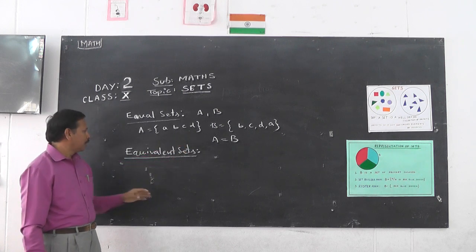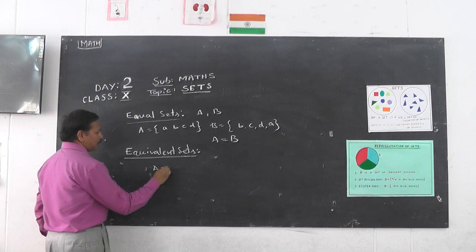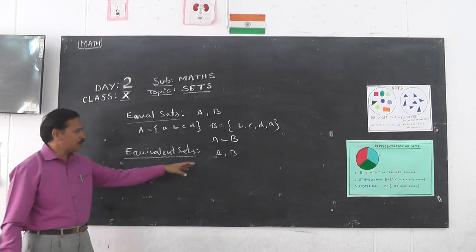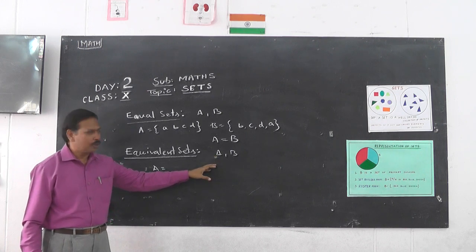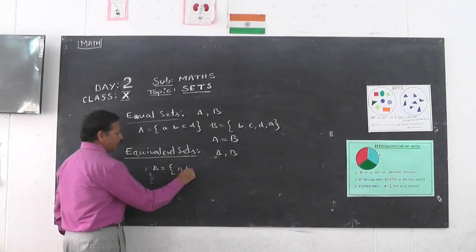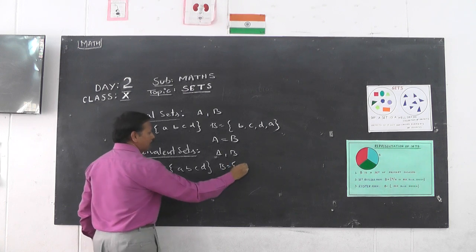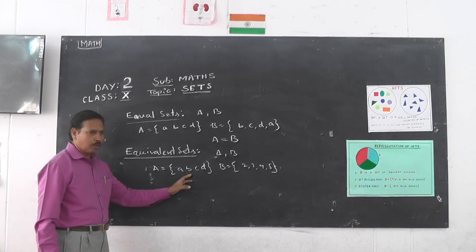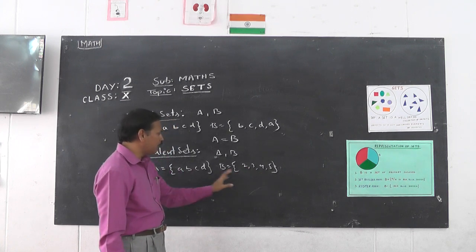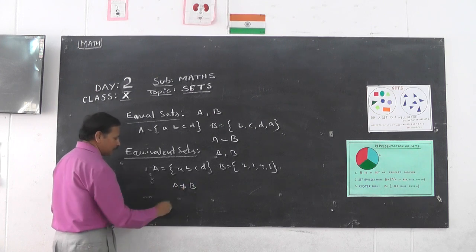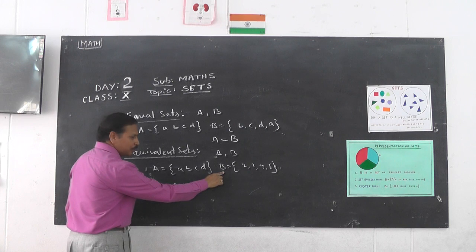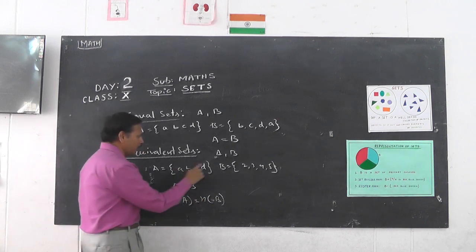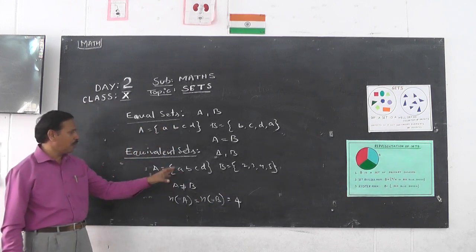Now, equivalent sets. Suppose in both sets A and B contain the same number of elements, then the sets are called equivalent sets. For example, set A = {A, B, C, D} and set B = {2, 3, 4, 5}. Here A contains 4 elements and B also contains 4 elements. The elements are different, so A is not equal to B, but we can say N(A) = N(B), that is the number of elements in set A equals the number of elements in set B. So A and B are called equivalent sets.